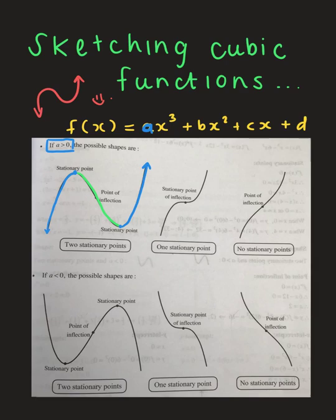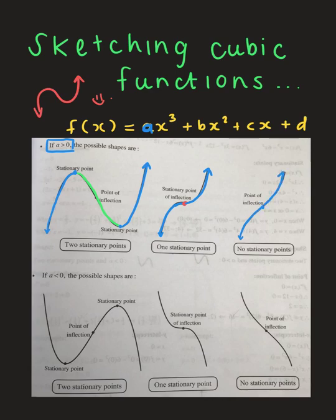When there is one stationary point, the function begins by increasing. This has a very unique name: a stationary point of inflection. That means the point of inflection and the stationary point share a coordinate, and the function keeps increasing. When there is only a point of inflection with no stationary points, the function is strictly increasing.